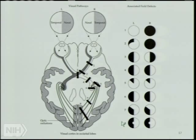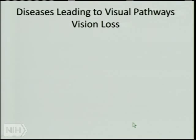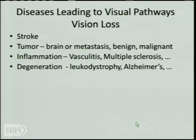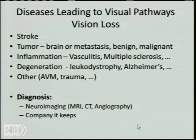Causes of visual pathway loss include stroke, tumor, inflammation, degenerations, arteriovenous malformations, and trauma. Diagnosis uses neuroimaging — MRI, CT, and angiography — as well as clinical context. For example, a patient with breast cancer and visual field loss might have a brain metastasis.